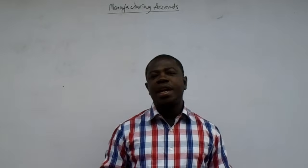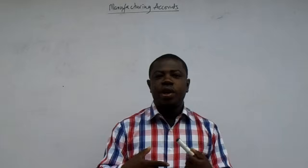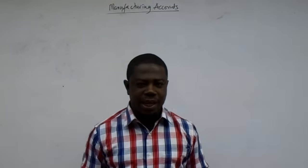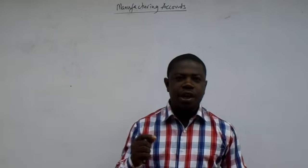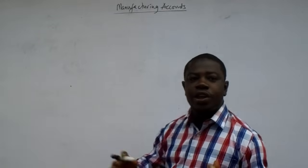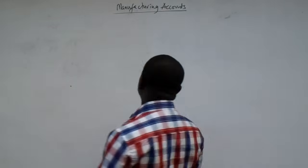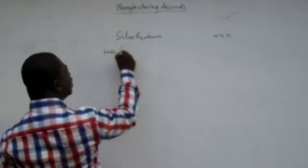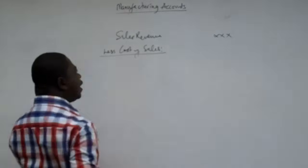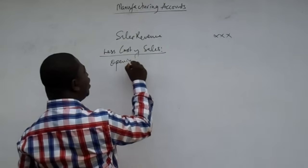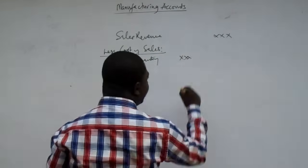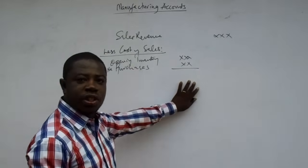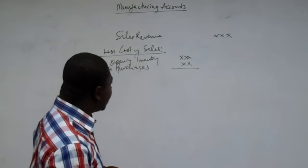Manufacturing organizations manufacture their own products and sell what they have produced, so they don't have issues with external purchases of products most of the time. Therefore, there is a change in the way we prepare their final accounts. For an ordinary company involved in buying and selling, we always start with sales revenue for the year, then calculate the cost of sales, beginning with opening stock or opening inventory, then adding net purchases to get the cost of goods available for sale.